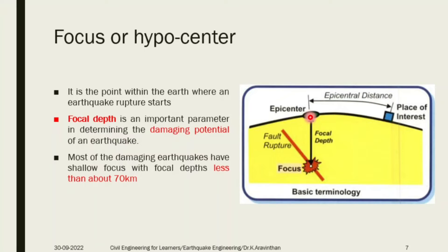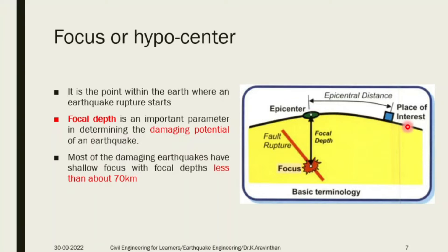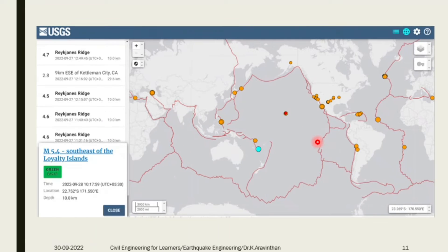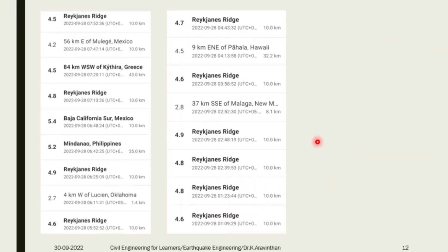If the earthquake is occurring below the ground, that depth is the focal depth. According to the depth it has been classified. Epicentral distance refers to if the earthquake can be observed more than 1000 km away, then it is called teleseismic. Focal depth and epicentral distance are two different concepts.